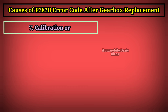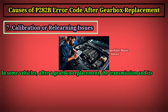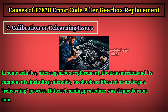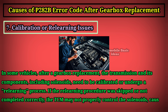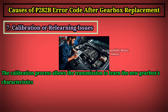Seven: calibration or relearning issues. In some vehicles, after a gearbox replacement, the transmission and its components — including solenoids — need to be calibrated or undergo a relearning process. If the relearning procedure was skipped or not completed correctly, the TCM may not properly control the solenoids, causing shifting errors and codes like P282B. The calibration process allows the transmission to learn the new gearbox's characteristics and ensure that the solenoids are functioning as they should.